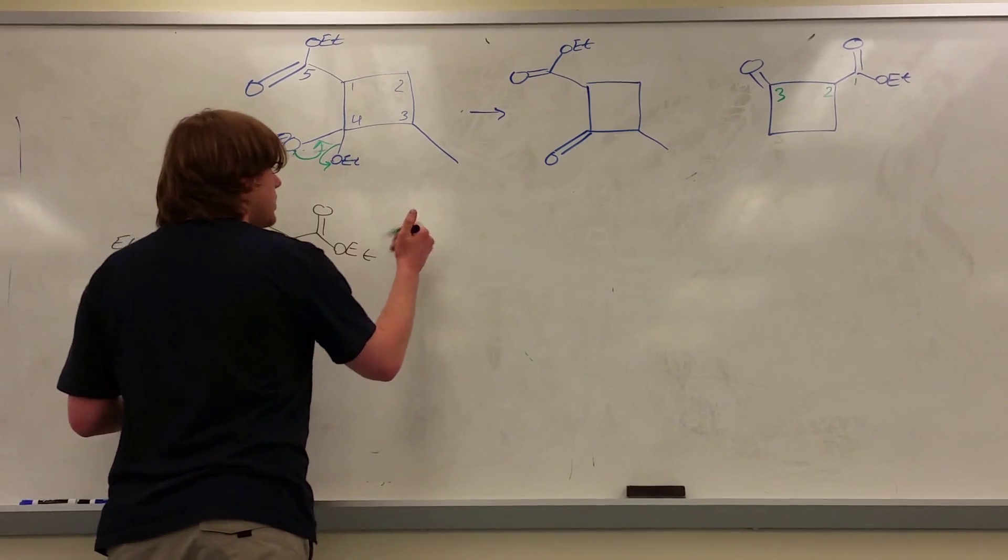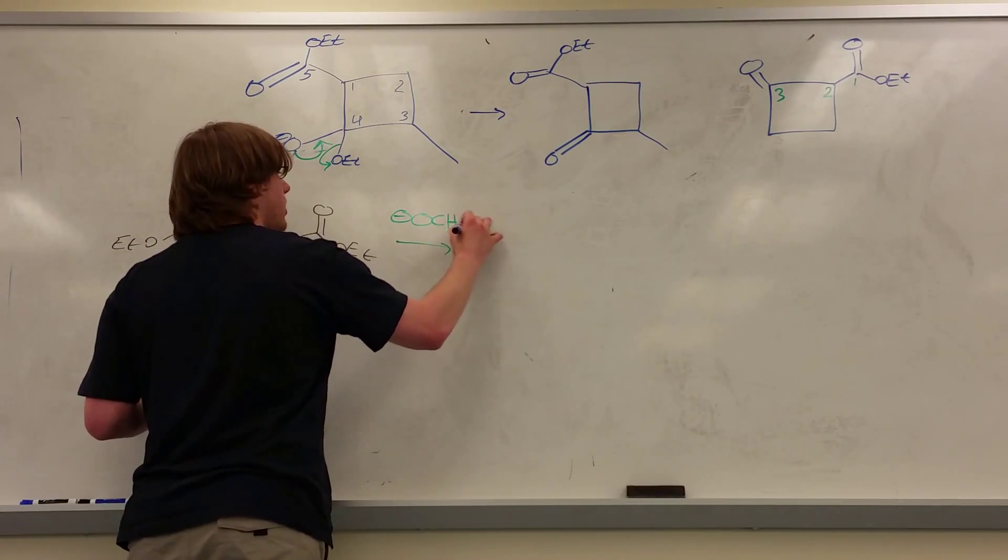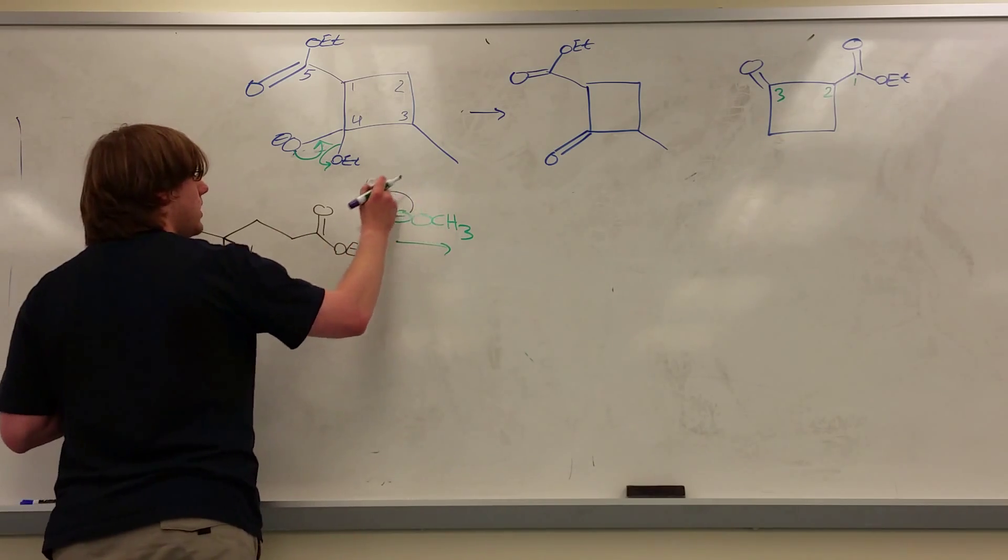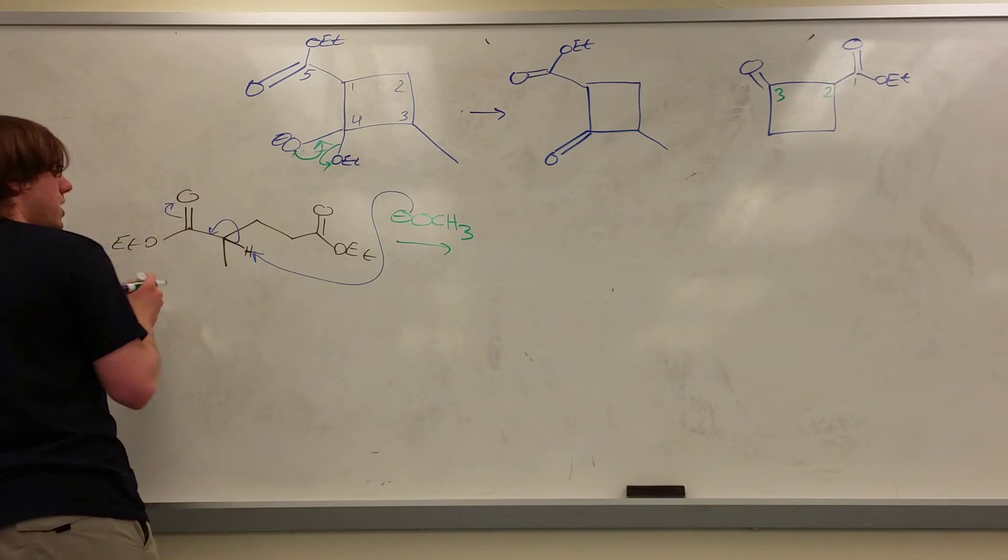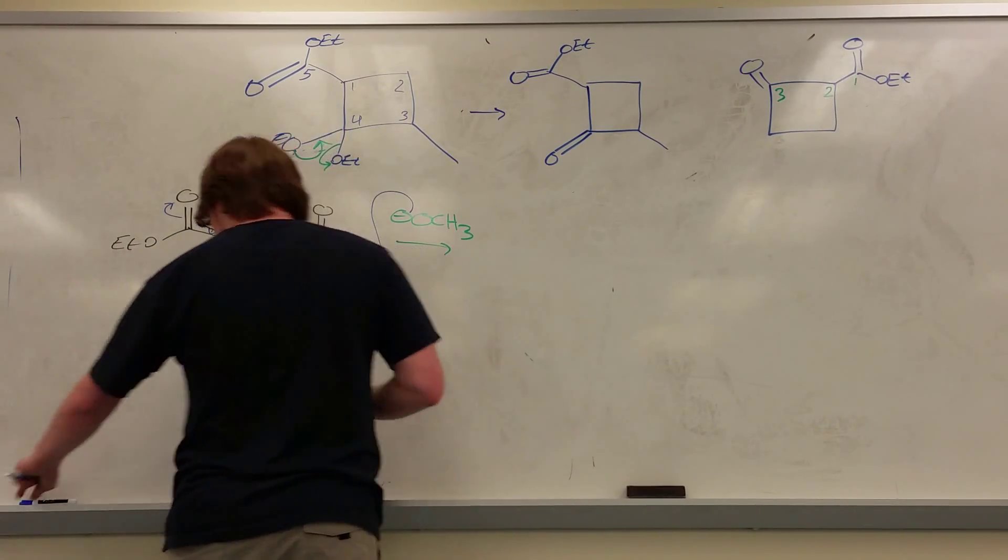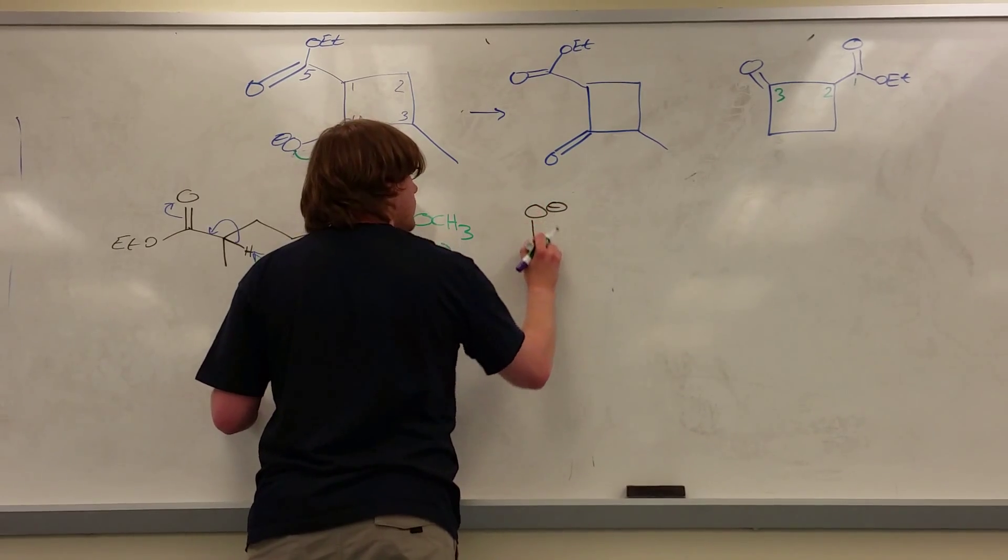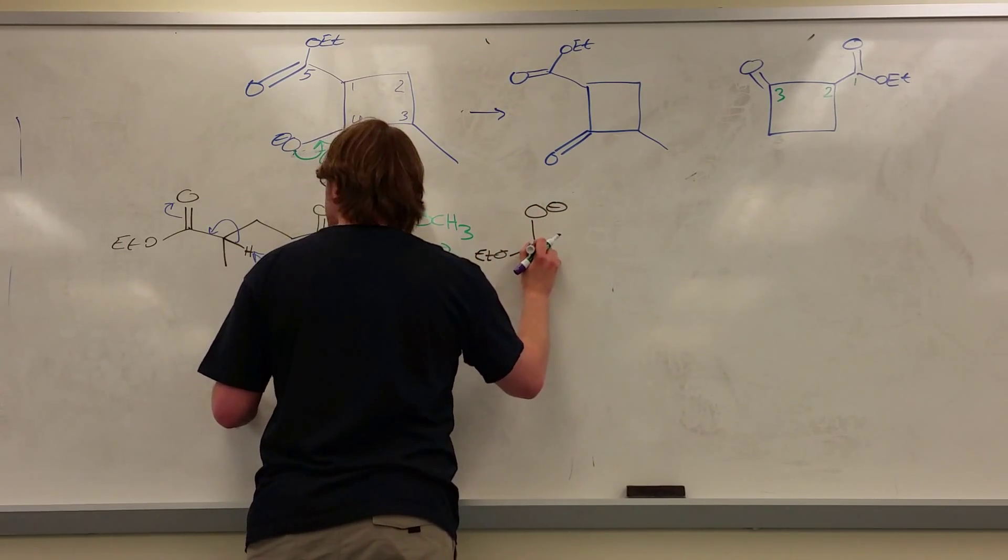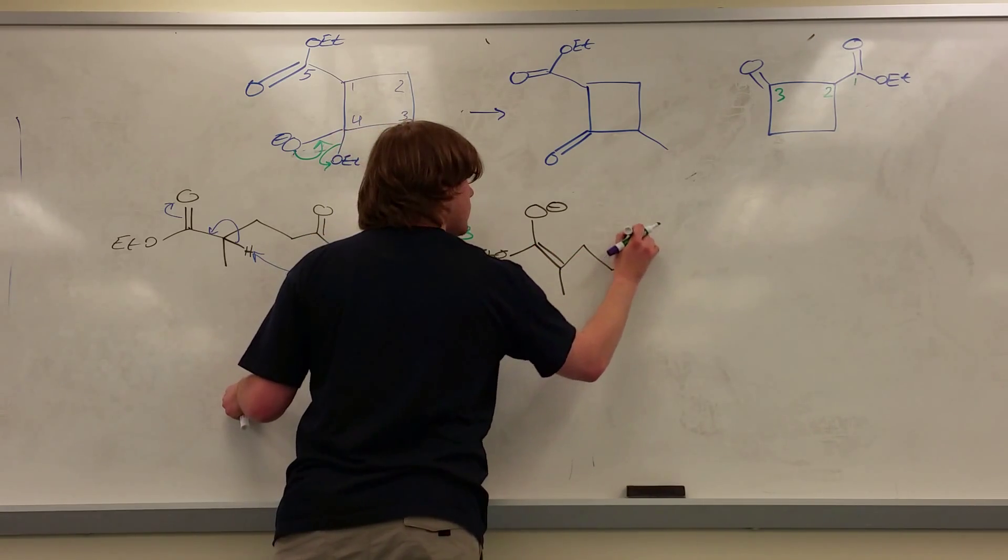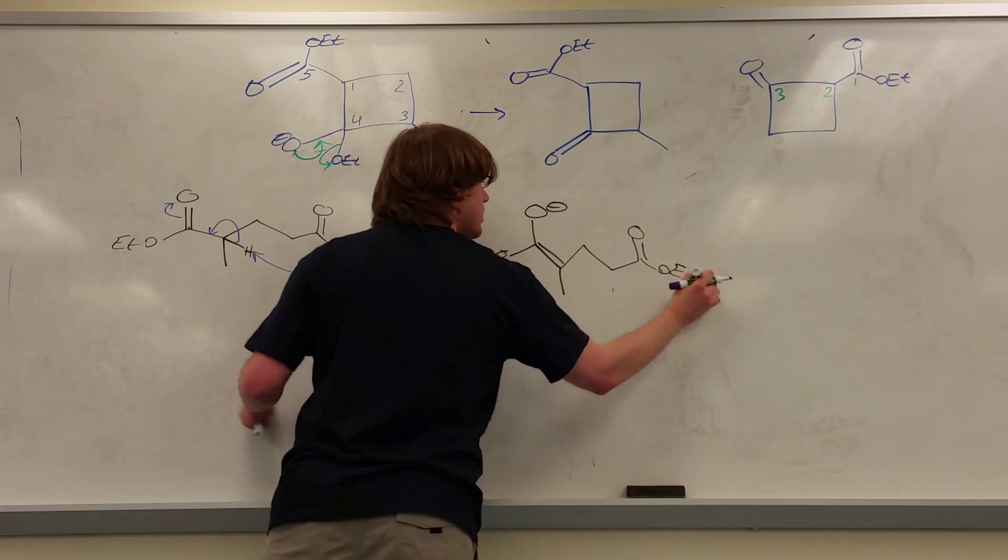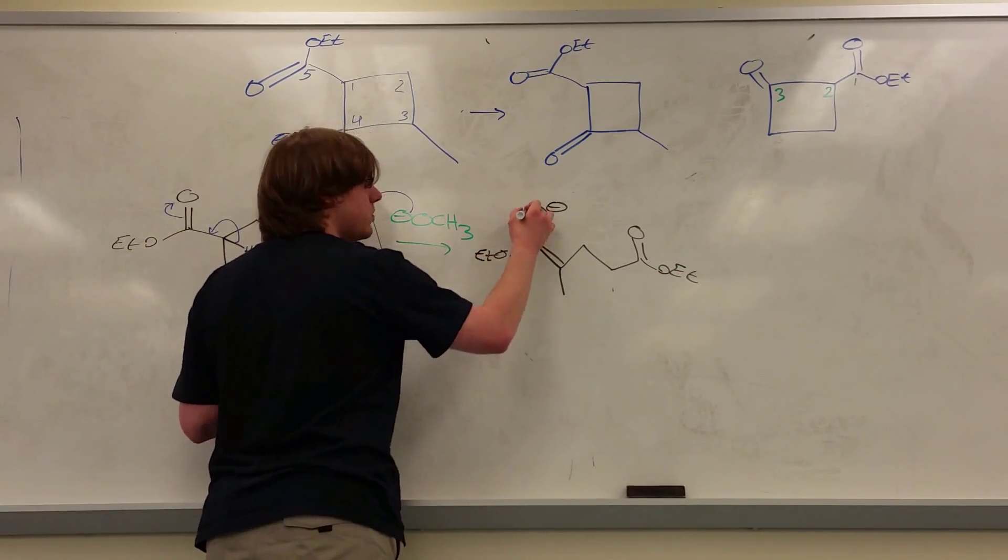So, as usual, our base comes in, and let's say it does pull off that proton. Technically, it would, but you'll see why it won't give us the final answer. So we pull off that proton, we form our enolate, and we get an O- OET double bond OET and now this O- will swing down, the double bond will attack the other carbonyl, swing up.